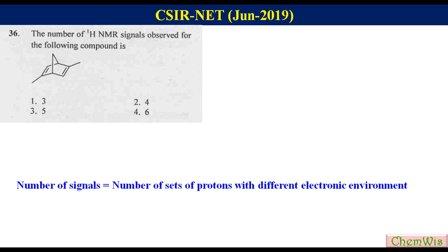Number of signals in the proton NMR of a compound is equal to the number of sets of protons with different electronic environment.